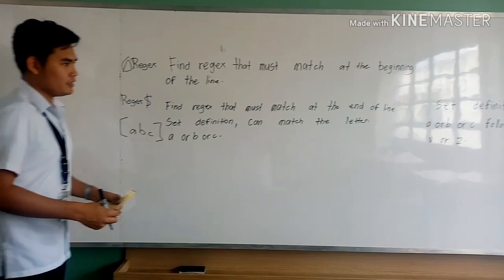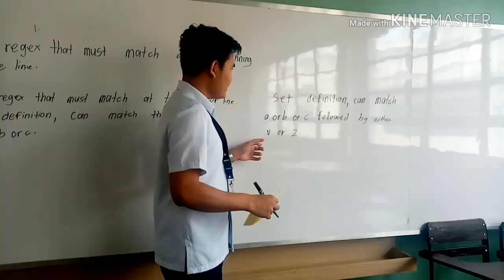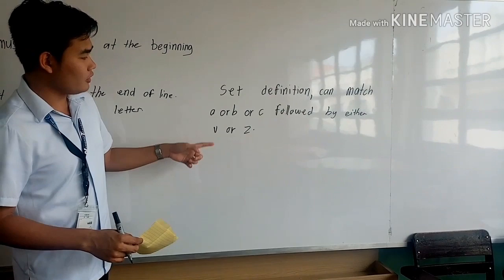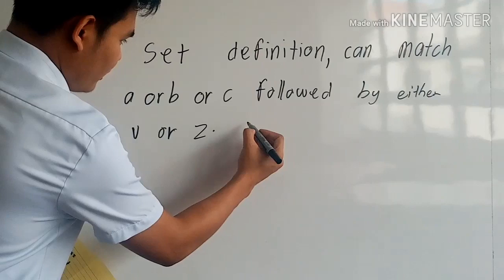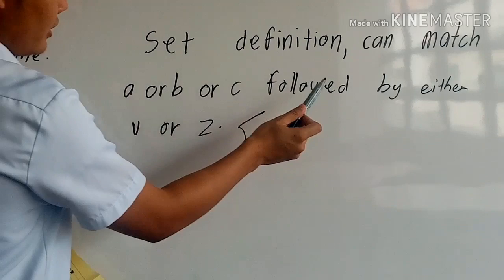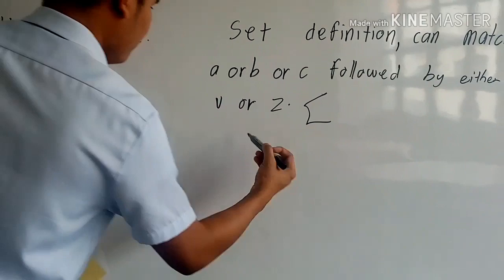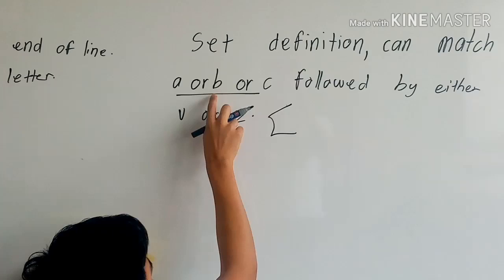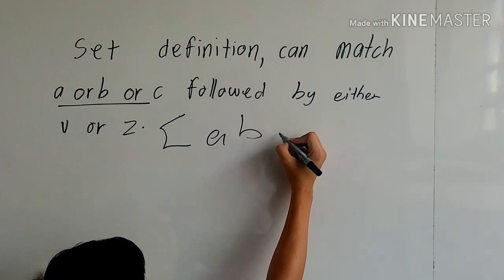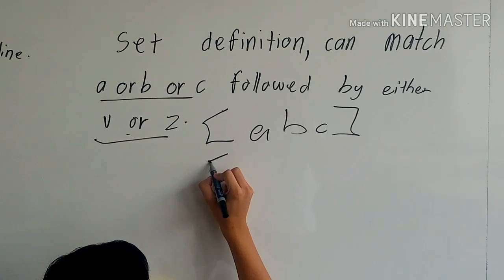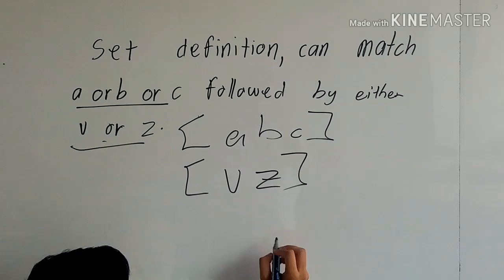Number four: a set definition can match A or B or C followed by either B or Z. So, if I have A or B or C — [ABC] — followed by B or C — [BC] — this is the final answer: [ABC][BC].